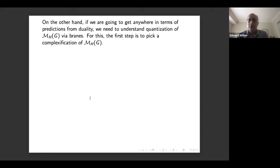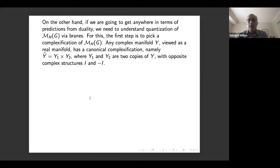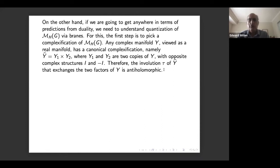The first step is to pick a complexification of the Higgs bundle moduli space that should have some nice properties. Any complex manifold Y, viewed as a real manifold, has a canonical complexification, namely Y-hat: the product of two copies of Y with opposite complex structures I and minus I. Because the complex structures on the two factors are opposite, the involution of Y-hat that exchanges the two factors is anti-holomorphic. Its fixed point set is the diagonal Y inside Y1 times Y2.